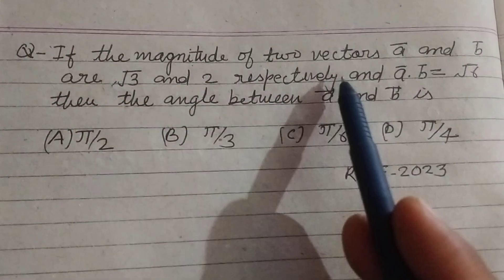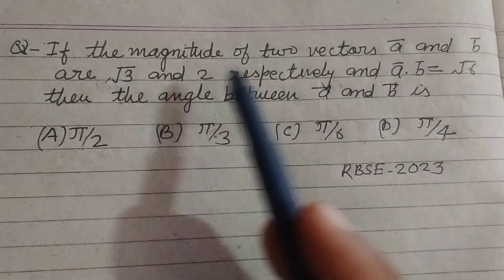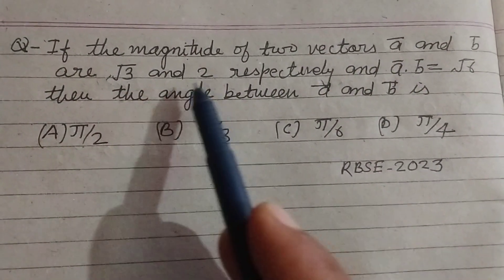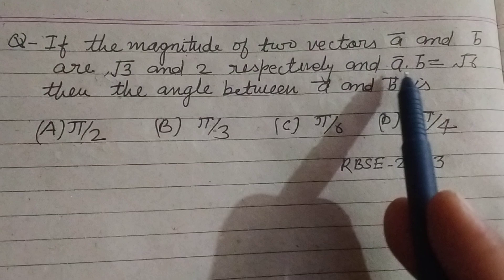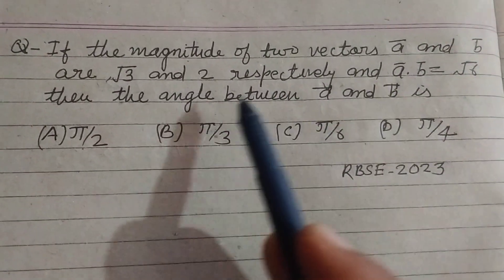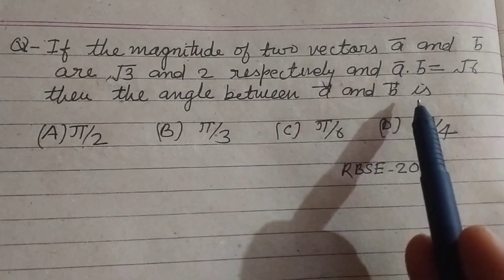If the magnitude of two vectors A and B are √3 and 2 respectively and A dot B equal to √6, then the angle between A and B is.